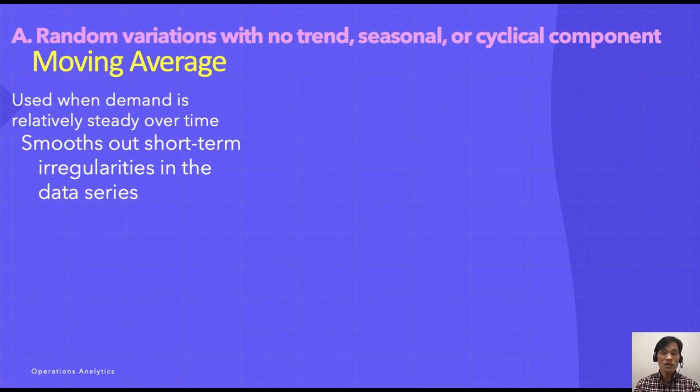Moving average is just the taking of average of multiple periods. It's a straightforward and conservative method. The formula is MA equals the sum of demand in previous n periods divided by n.